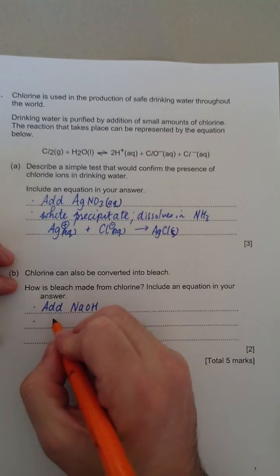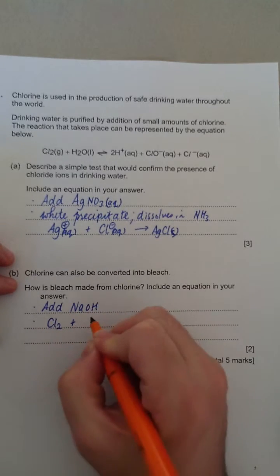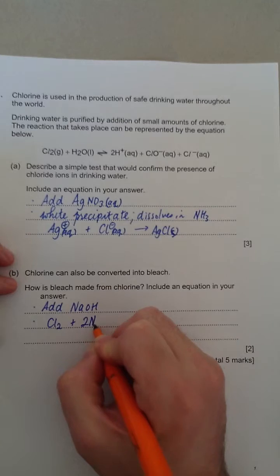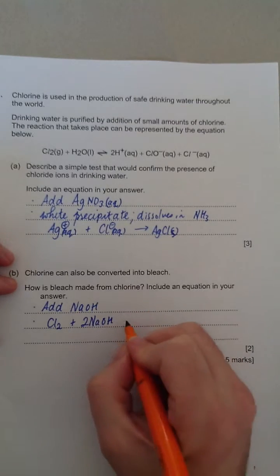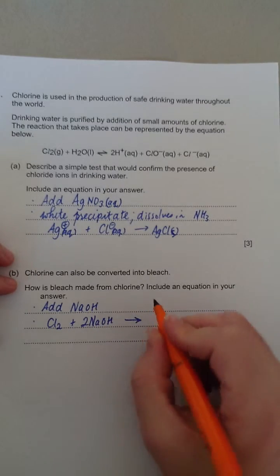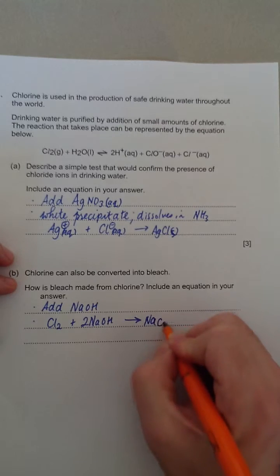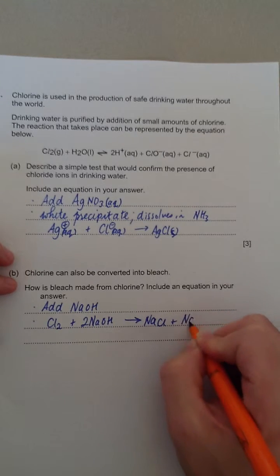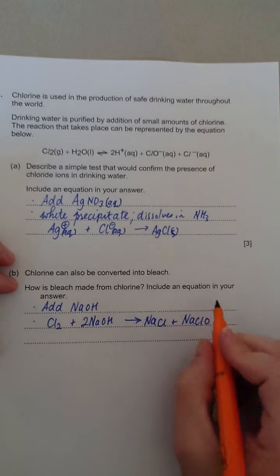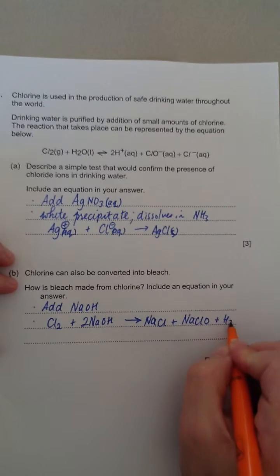And the equation for this, you need to remember it, if you can't derive it, is Cl2 plus 2 NaOH, two lots of sodium hydroxide, goes to NaCl plus NaClO, that's the bleach part, plus water.